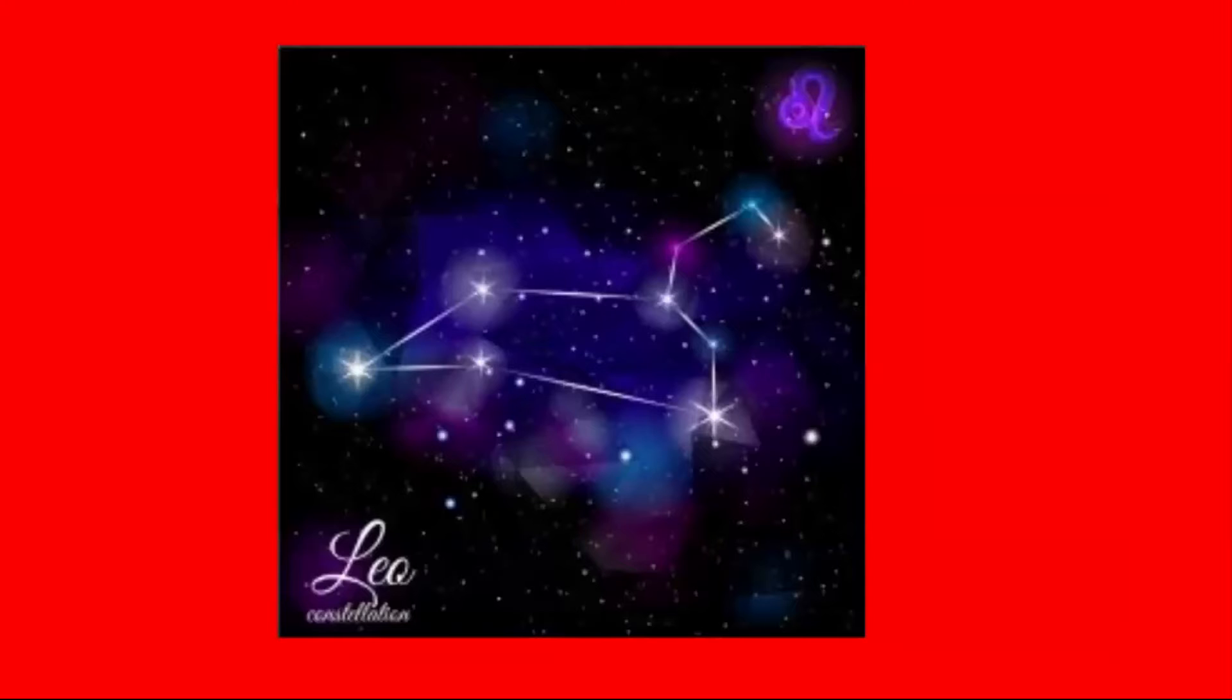Constellations are groups of stars that form a pattern. This constellation is called Leo because it looks like a lion. Can you see the lion? This one is called Scorpio. Can you see the scorpion?